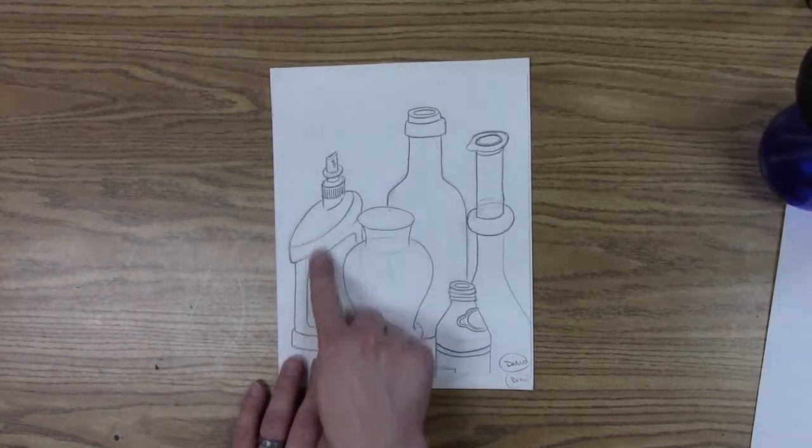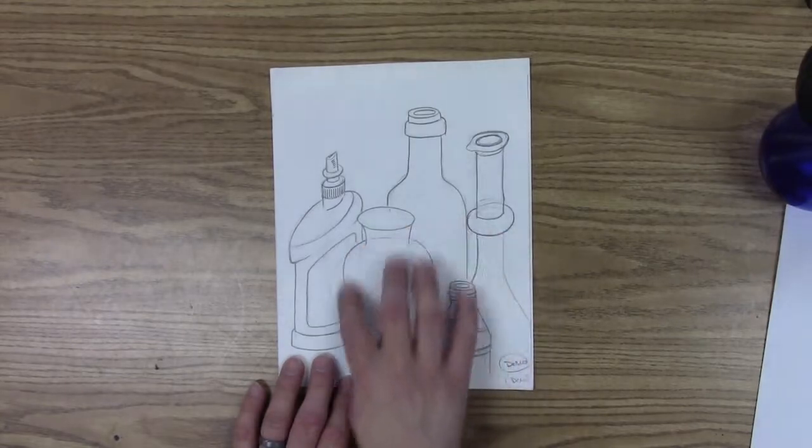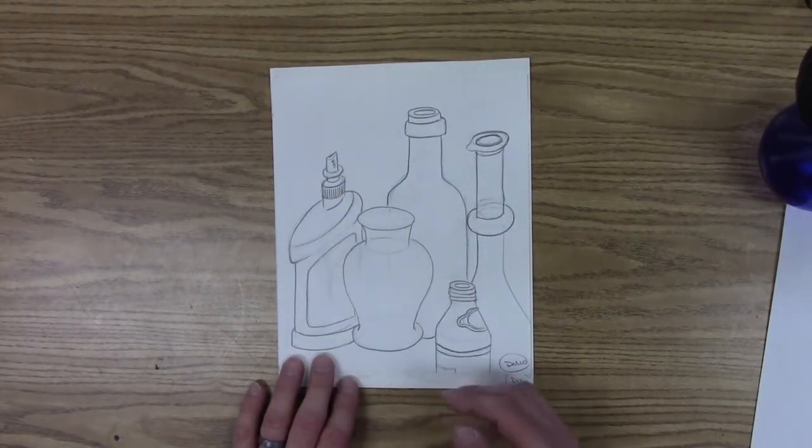Some are bottles that are opaque like this glue bottle, some of these are vases and things that are clear. You'll notice though that they should look like if they are further back in space, they're higher on the picture plane of my page.